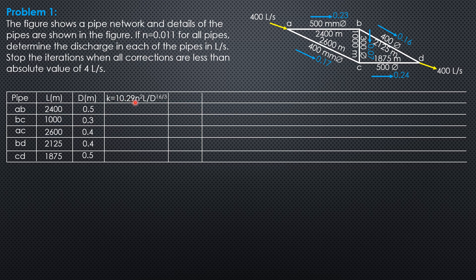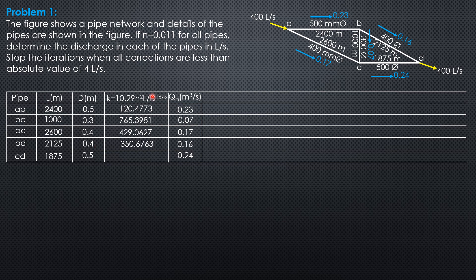The value of K is given by 10.29 × n² × L / D^(16/3). In your calculator: 10.29 times 0.011 squared times 2,400 divided by 0.5 to the 16/3 power for AB. Then replace L by 1,000 and diameter by 0.3 for BC. Replace L by 2,600 and diameter by 0.4 for AC. Then replace L by 2,125, same diameter for BD. Then replace L by 1,875 and diameter by 0.5 for CD, and you get those values.